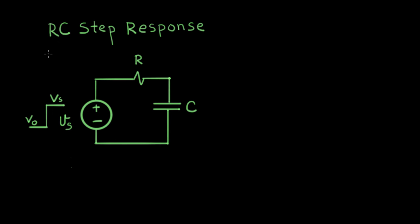In this video we're going to introduce the idea of a step response. This is one of the most common occurrences in all of electronics. It happens anytime there's some resistance and some capacitance in series, and in particular, it happens billions of times a second inside every computer. That's why we want to study this very carefully.